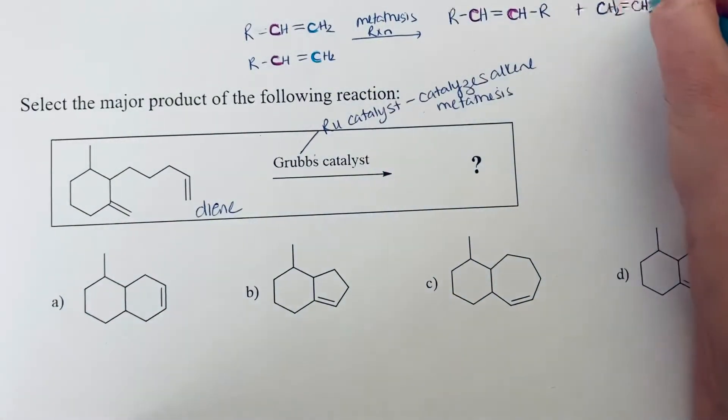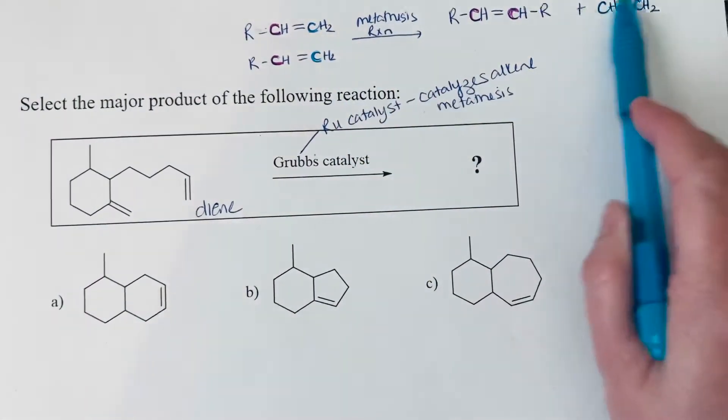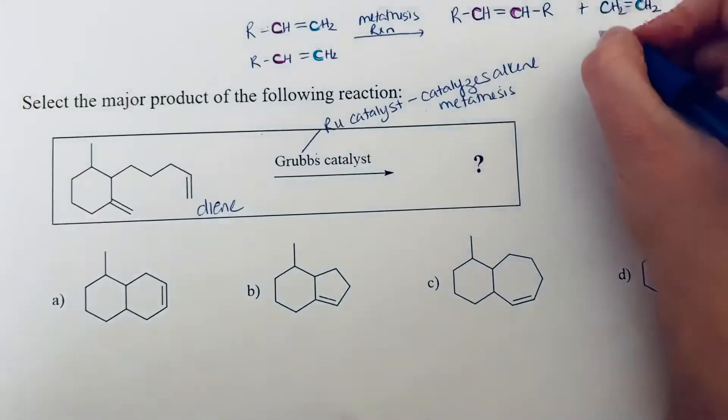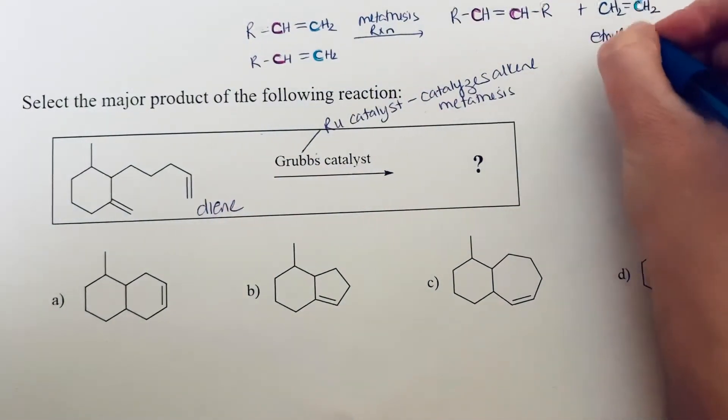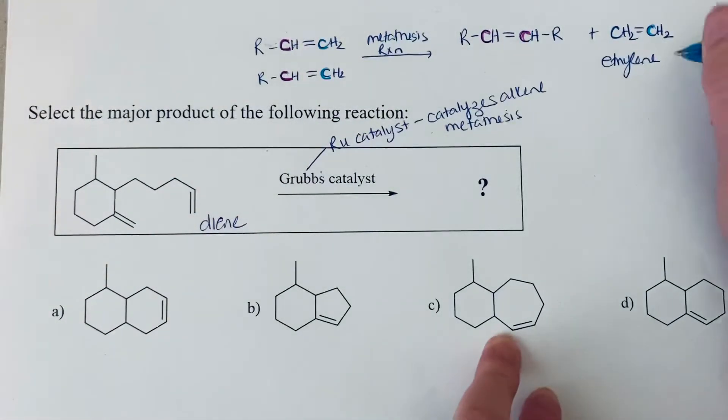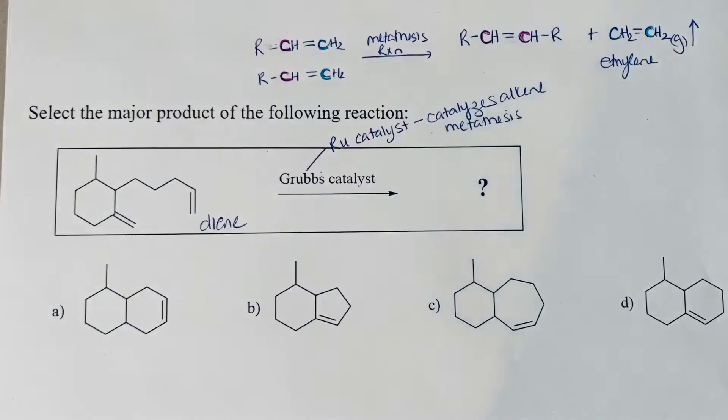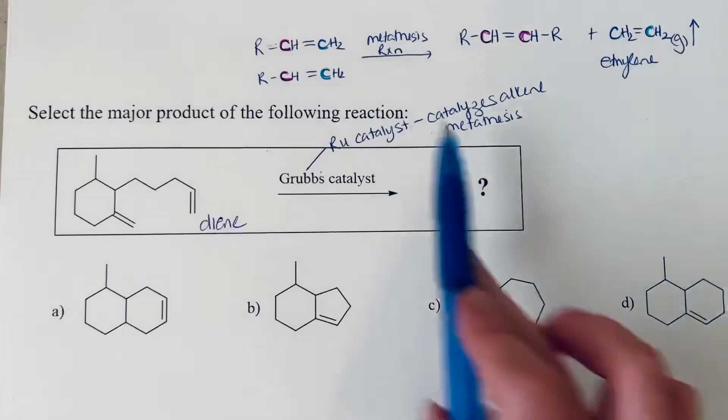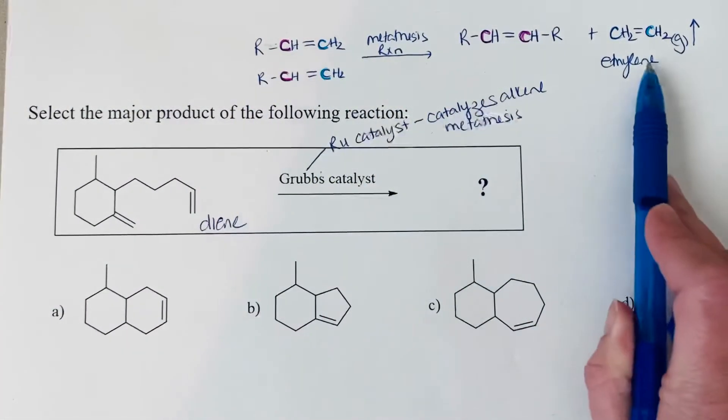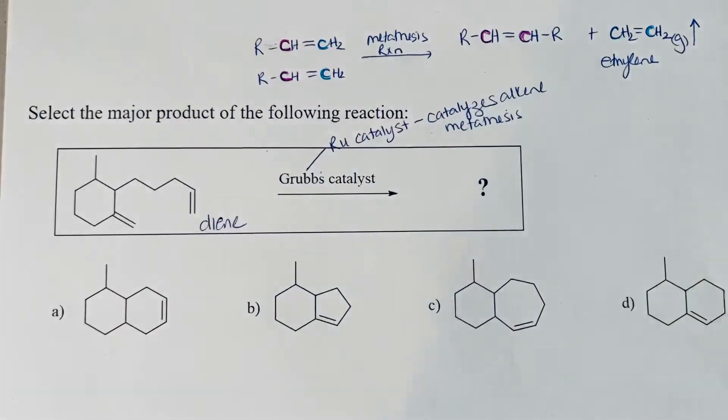And so alkene metathesis reactions work best when you can form a little alkene. So this small ethylene, if this can be formed as a byproduct, this helps to make the reaction favorable because this is a gas. And so what happens when you do that is it just bubbles out of solution. So having a product removed as the reaction's proceeding helps to draw the reaction towards the products.